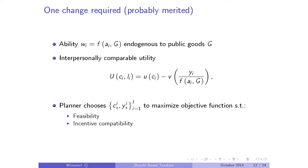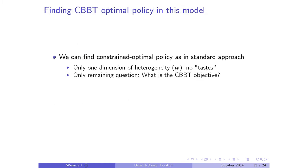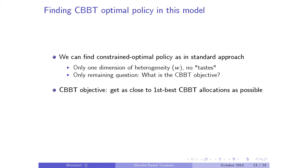I'm going to use the fact that I've now got the basis for benefit-based taxation in my model to look for a benefits-based tax policy. To find the constrained optimal policy, you need to specify the new objective. The benefits-based objective is to get as close to the first-best classical benefit-based allocation as possible—the second best is just to get as close as you can to the first best.